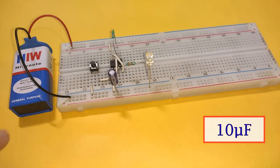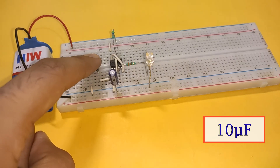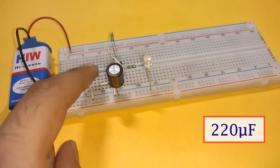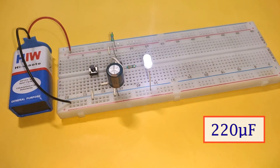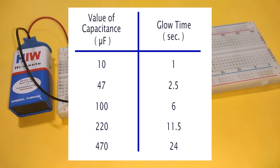You can decrease or increase the glow time by changing the value of capacitance. Increasing the capacitance increases the time for which the LED remains on. You can refer to this table to see the relationship between the capacitance and the glow time.